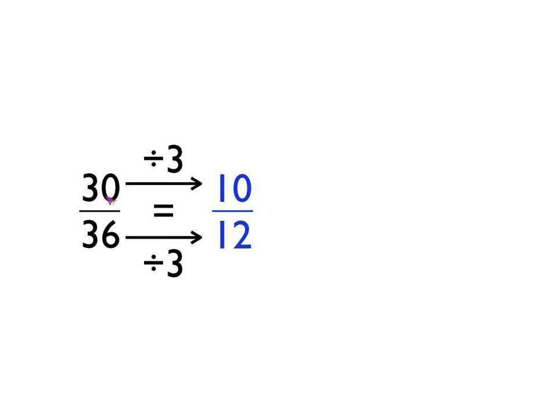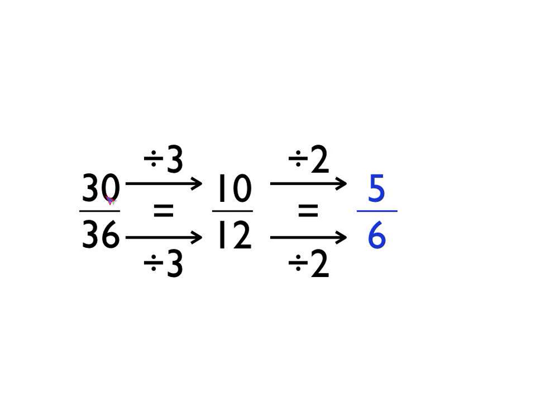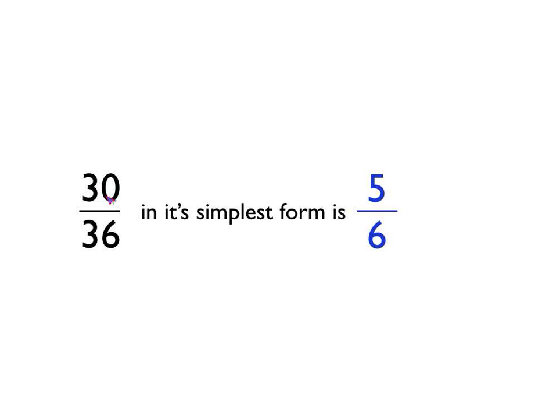Is that in its simplest form? No, it's not — because I can think of a number that divides into ten and twelve a whole number of times. That number would be two. So I'm going to divide the numerator and the denominator by two: ten divided by two is five, twelve divided by two is six. So we get five-sixths, which is still an equivalent fraction. Can we think of a number that divides into five and divides into six, a number that's a factor of both? I can't. So that's it — that's the simplest form. Thirty thirty-sixths in its simplest form is five-sixths.